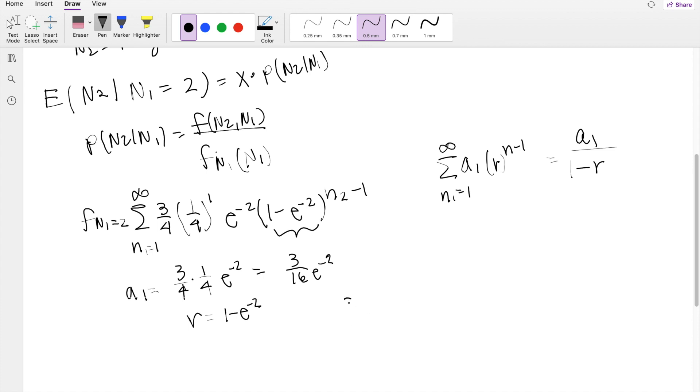So plugging into our formula here, it's going to be 3 over 16, e to the negative 2, times 1 over 1 minus 1 minus e to the negative 2.